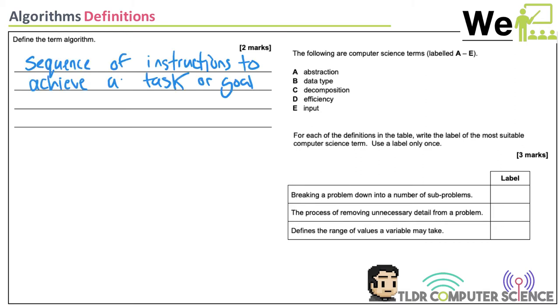Let's have a look at the second question. The following are computer science terms: abstraction, data type, decomposition, efficiency, and input.